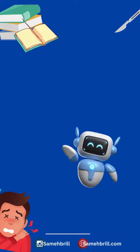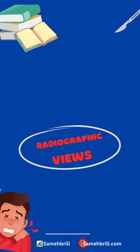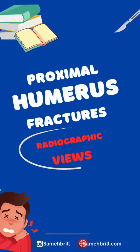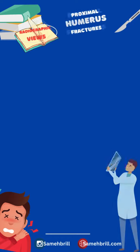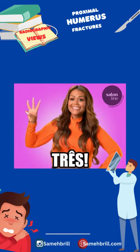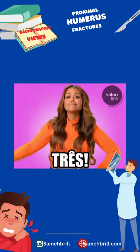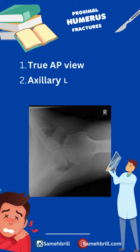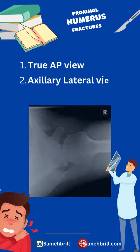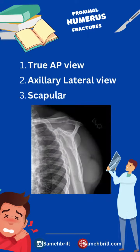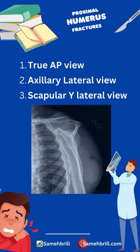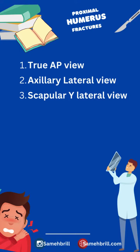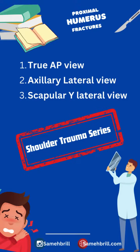Hey there and welcome back. Today we'll talk about the radiographs needed for proximal humeral fractures. There are three main views that should be obtained: the true AP view, the axillary lateral view, and the scapular Y view. Those three main views are called the shoulder trauma series.